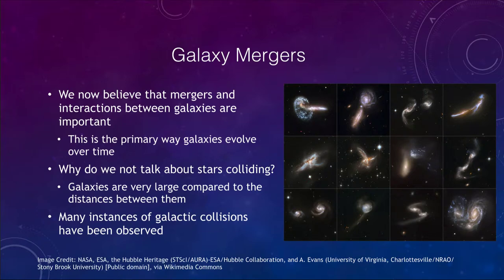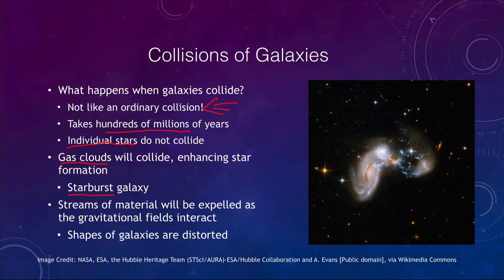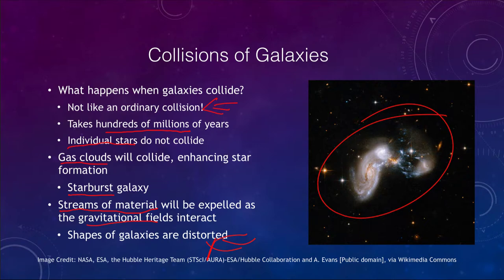A galaxy collision is not like an ordinary collision — not like colliding cars. Galaxy collisions can take hundreds of millions of years, and the individual stars do not collide. What does collide are the gas clouds, which enhances star formation. This gives rise to what we call a starburst galaxy, in which galaxies have a burst of star formation because their gas clouds collided together, enhancing the rate at which stars form. We also see streams of material expelled as the gravitational fields interact, distorting the shape of the galaxy, so colliding galaxies do not look like ordinary spiral or elliptical galaxies.